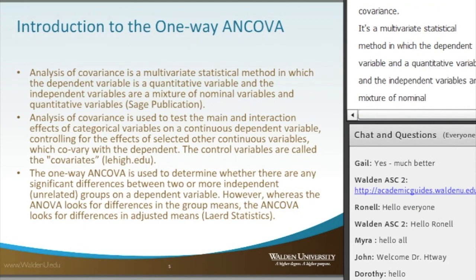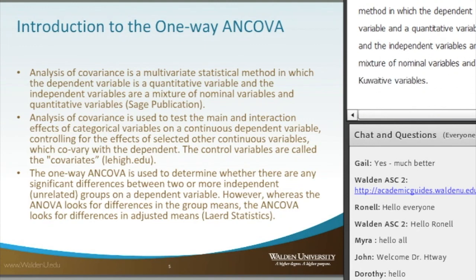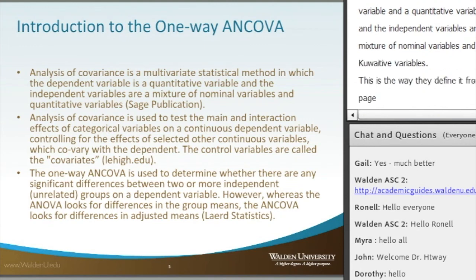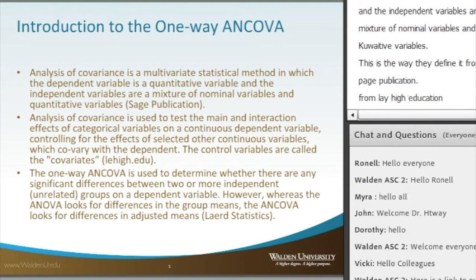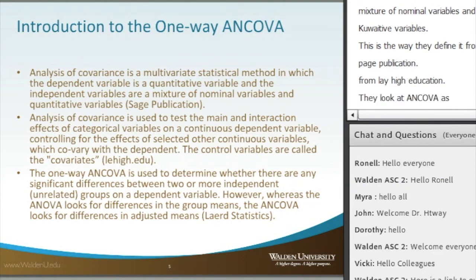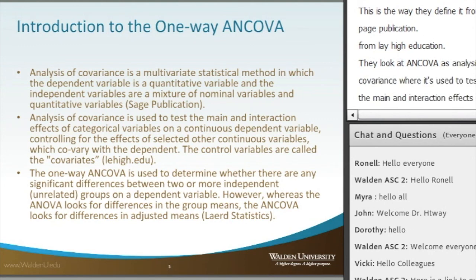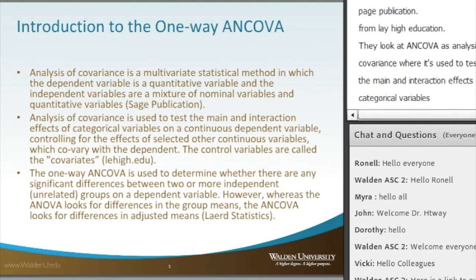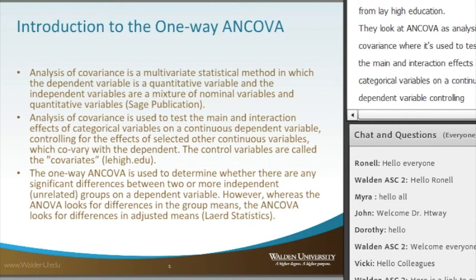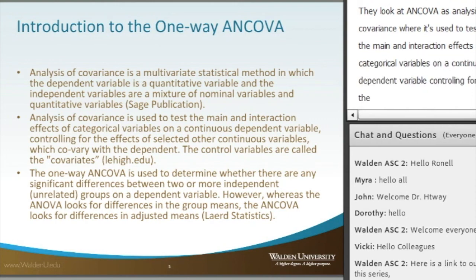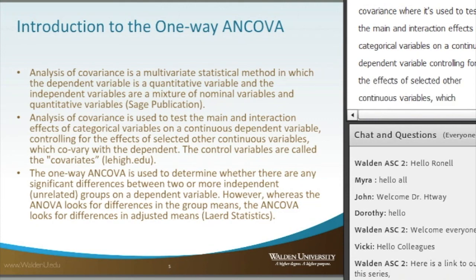From Leh High Education, ANCOVA — analysis of covariance — is used to test the main and interaction effects of categorical variables on a continuous dependent variable, controlling for the effects of selected other continuous variables which co-vary with the dependent. These control variables are also known as covariates, and we're going to look at something similar to that today.